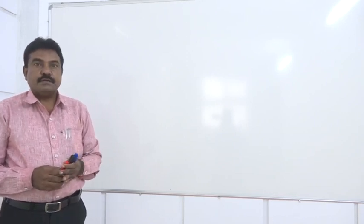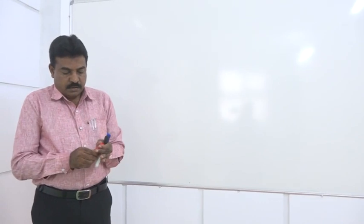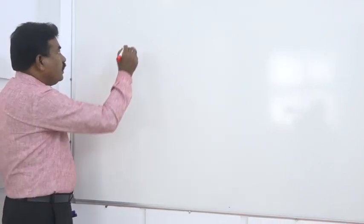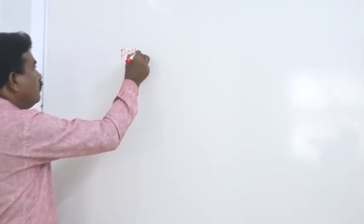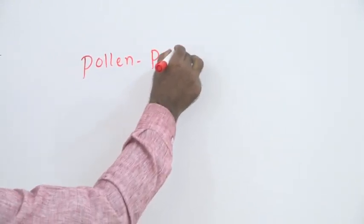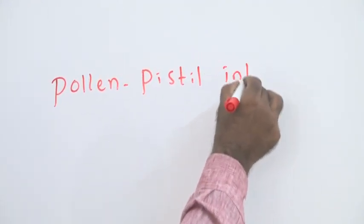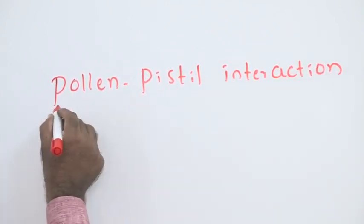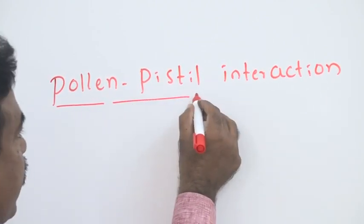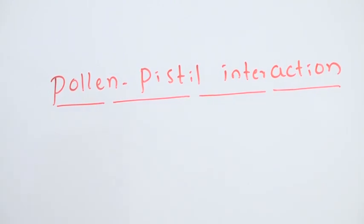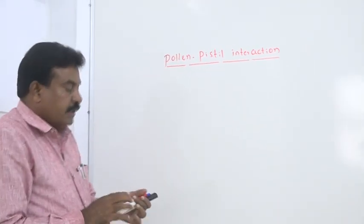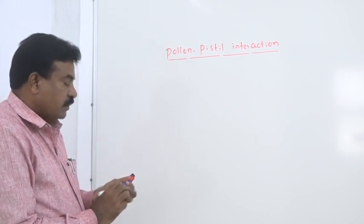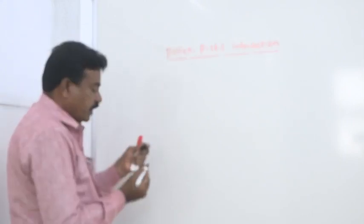In the topic of sexual reproduction in flowering plants, we are here to discuss one more important part — pollen-pistil interaction. That means how pollen grains and pistils interact with each other after pollination. In this part, we have to discuss three important concepts.